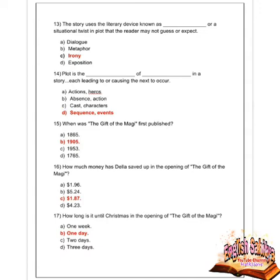Next question: how much money has Della saved up in the opening of The Gift of the Magi? Given options are $1.96, $5.24, $1.87, and $4.23. Option C is correct — $1.87 was the money Della had saved up in the opening of the story.